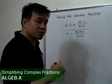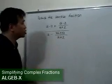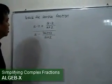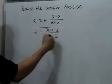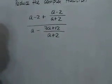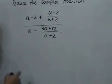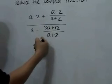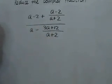In this next problem, we are asked to reduce this complex fraction into a simple one. If you inspect all parts of this complex fraction, you will see that we have the denominator a plus 2 being common to this and this fraction.